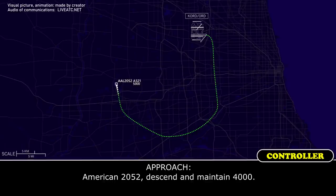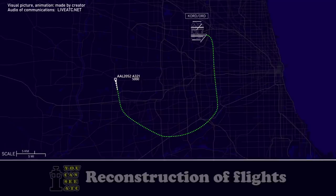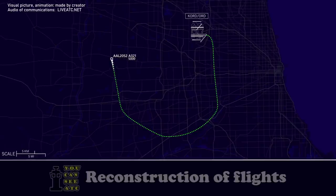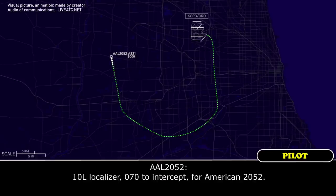American 2052, descend and maintain 4,000. 4,000 for American 2052. American 2052, turn right heading 070 and intercept the 10 left localizer. 10 left localizer, 070 to intercept for American 2052.